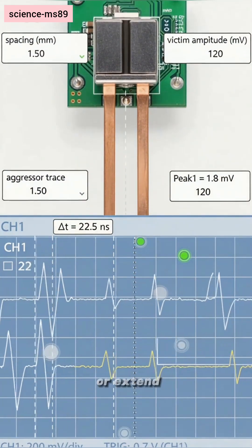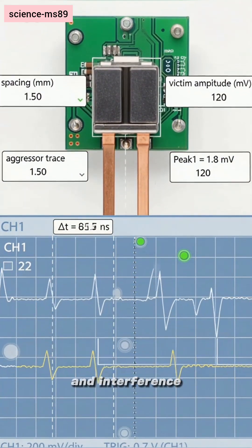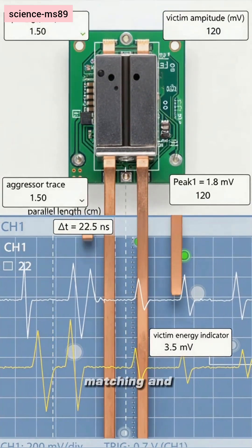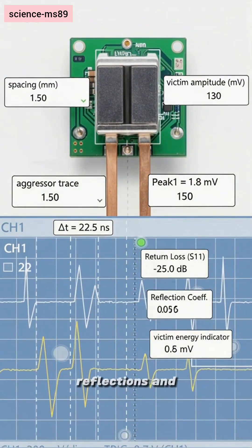Decrease spacing or extend parallel length, and interference rises. Better impedance matching and shorter runs reduce reflections and crosstalk energy.